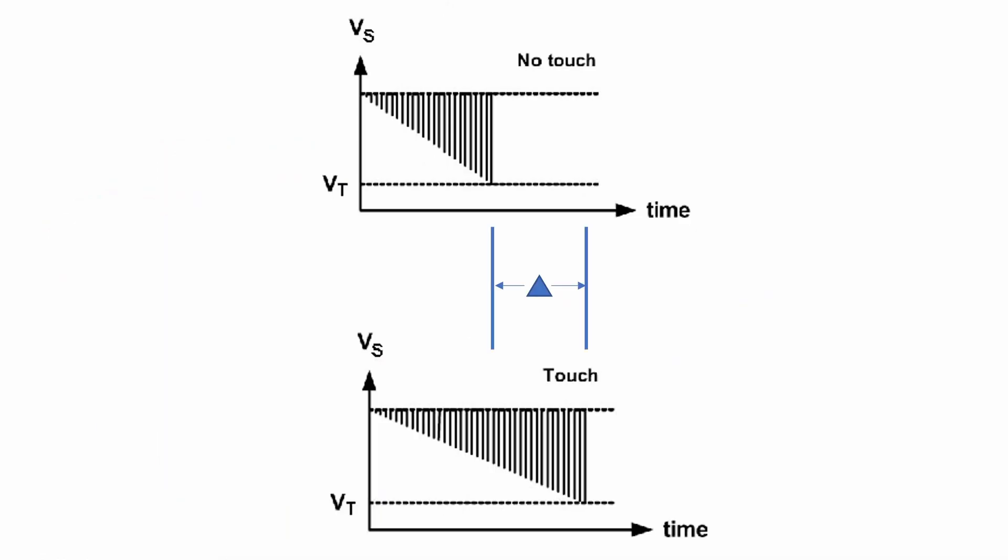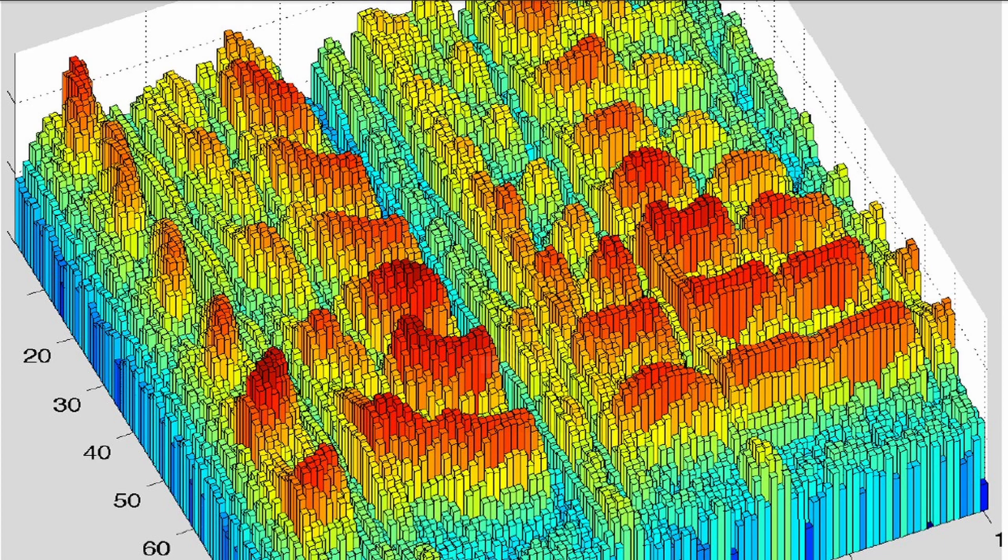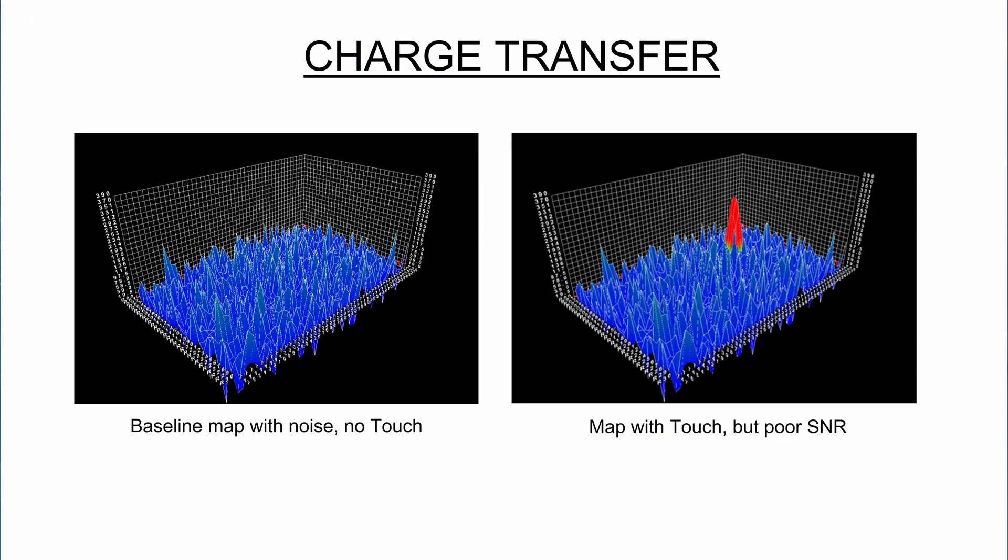This changes the number of pulses required to integrate the capacitor and creates a measurable delta. These deltas are stored for every capacitor across the sensor and a heat map is created for the screen, which is ultimately used to establish touch location.